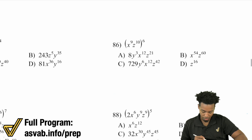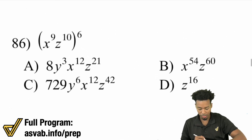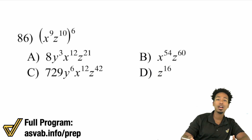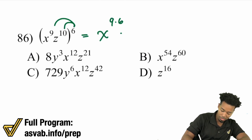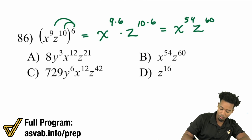Number 86: power to a power — multiply each piece's exponent by that exponent. So that's x to the power of 9 times 6, times z to the power of 10 times 6. That ends up being x to the power of 54 times z to the power of 60.